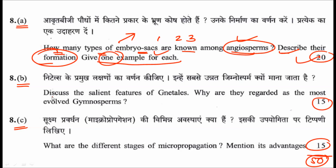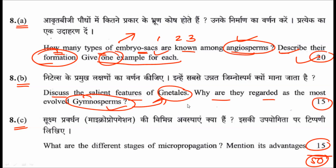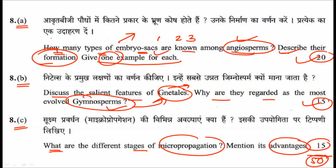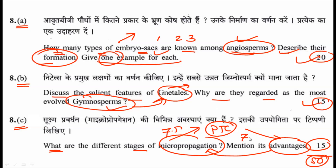The second sub-question asks you to discuss the salient features of Gnetales and why they are regarded as the most evolved gymnosperms — a topic covered in any graduation-level botany book, for 15 marks. The last sub-question asks for the different stages of micropropagation in order and its advantages. Micropropagation is related to plant tissue culture; the first part carries 7.5 marks and the second part 7.5 marks, totalling 15 marks.